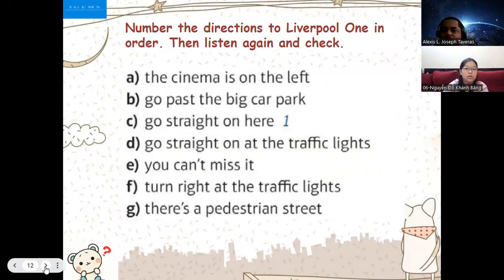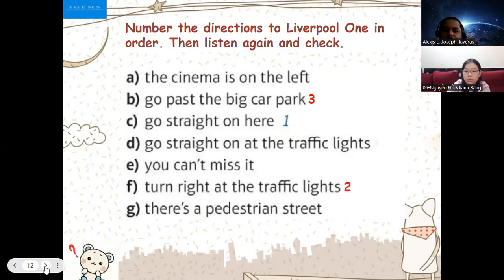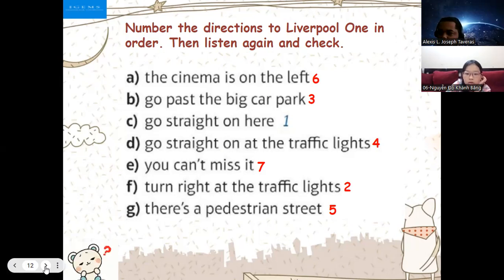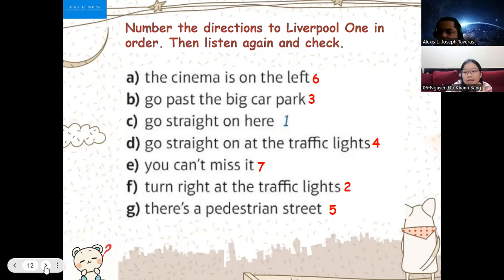You will use a logical order. You can tell me what is first, what is second, what is next using the numbers. The first one: go straight on here, then turn right at the traffic light, go past the big car park, then go straight on at the traffic light, then there's a pedestrian street — the cinema is on the left and you can't miss it.